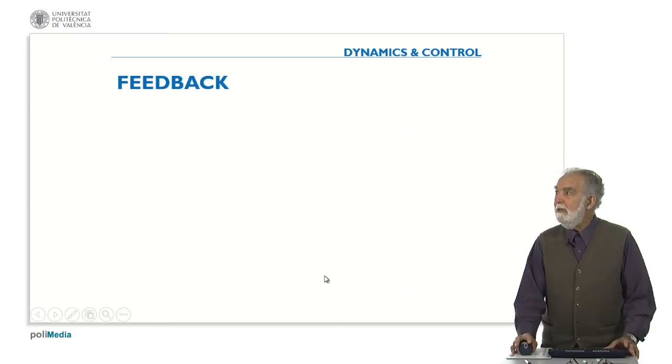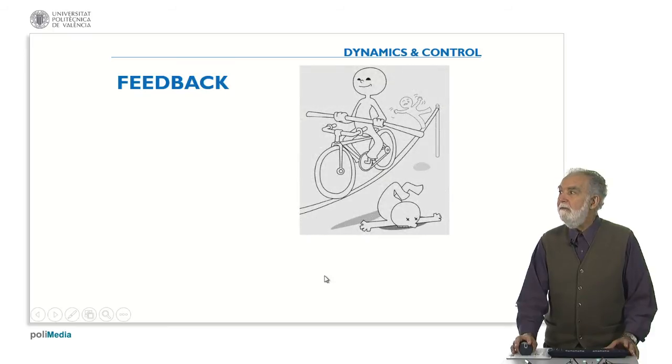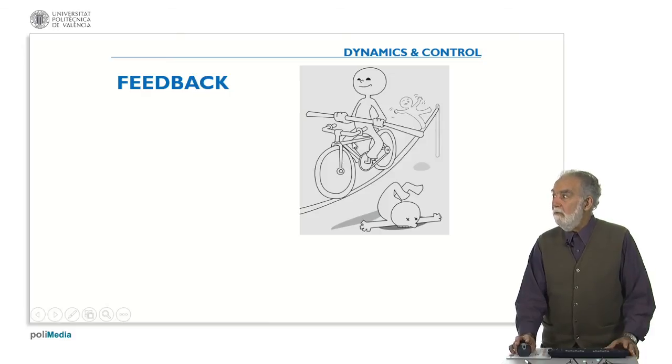So stability is a crucial property and we are going to see that feedback is important. In this cartoon that we have seen at the beginning, we see that the boy on the bicycle is keeping stable on the string because if he feels that the bicycle is moving to the left, then he, which is the controller in that case, is moving to the right to balance and to keep the center of gravity on the top of this string.